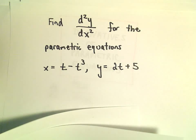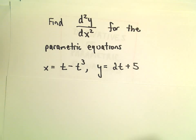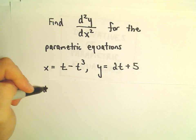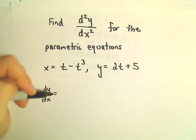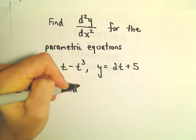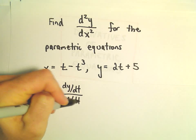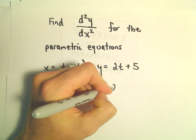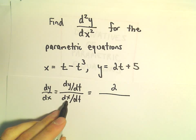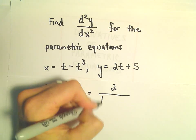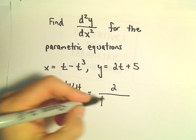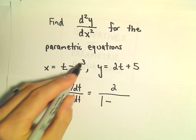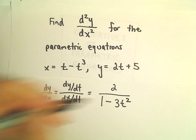So the first thing we'll have to do is find the first derivative. So the first derivative, dy over dx, that's going to be dy over dt all over dx over dt. So the derivative of y with respect to t is just going to be 2. The derivative of x with respect to t, the derivative of 1t would be 1 minus the derivative of t to the third will be 3t squared.